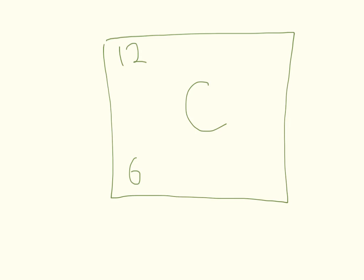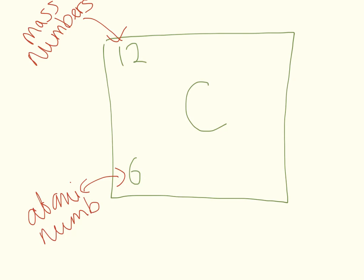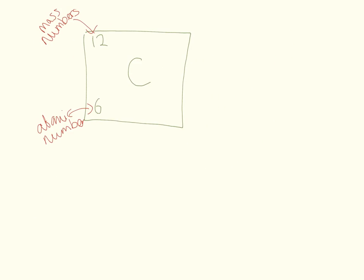So we need to understand what the periodic table can tell us. This is carbon, you'll see it has one number up here, and another number down here. You need to know what these numbers are. This is the mass number. This is how much carbon weighs. And this is the atomic number.